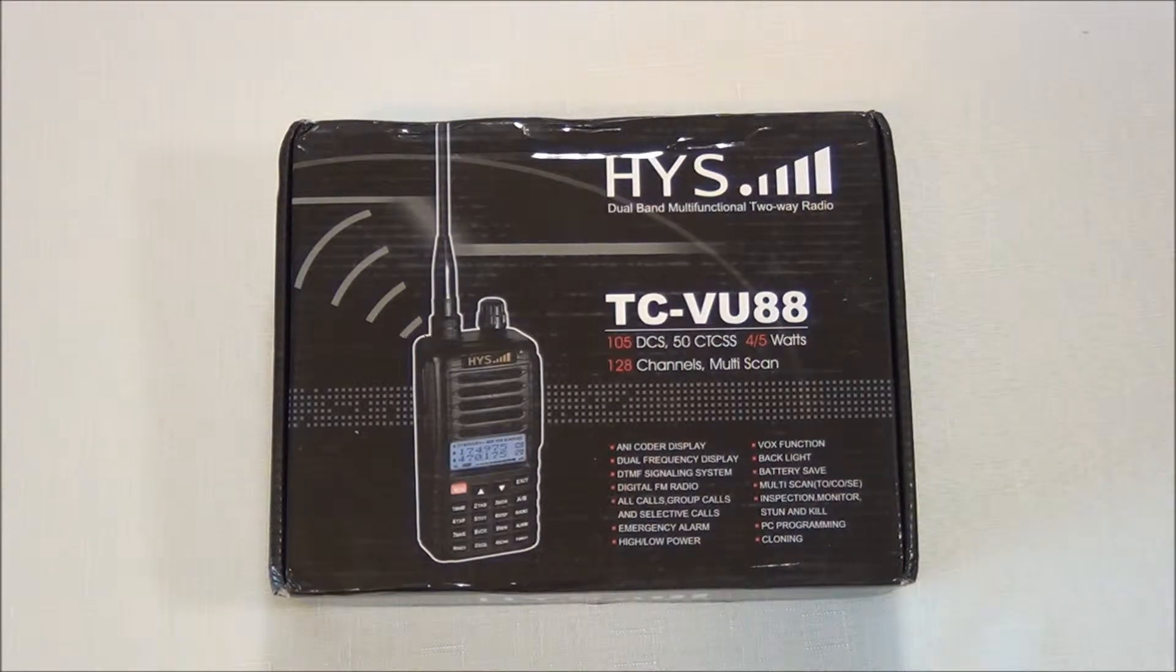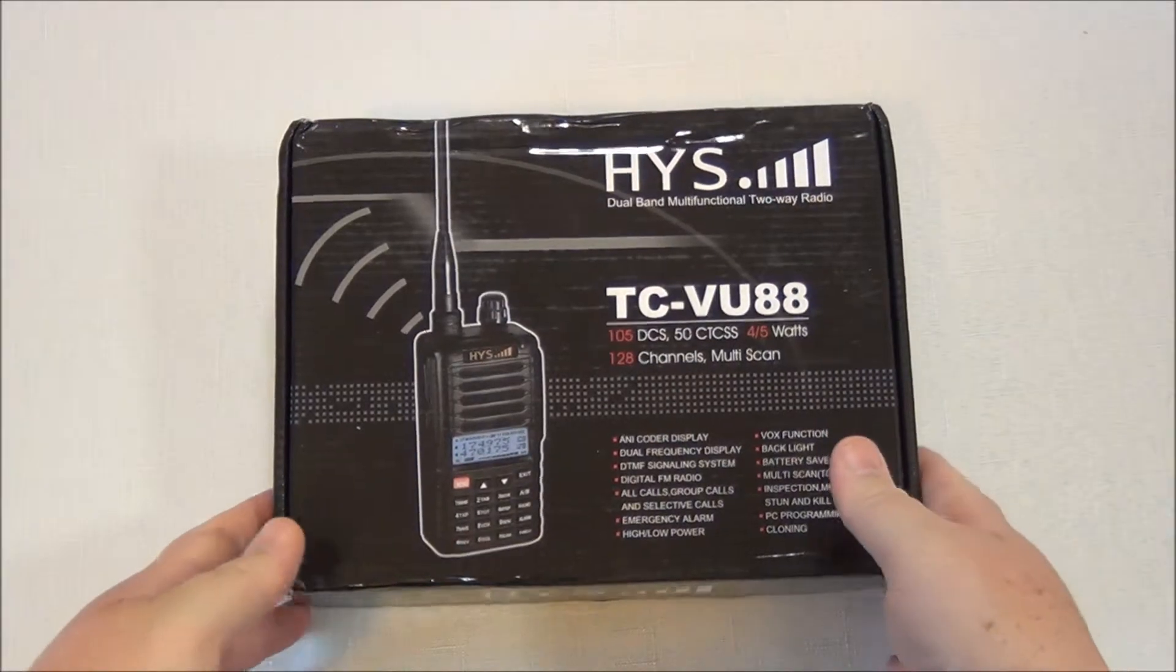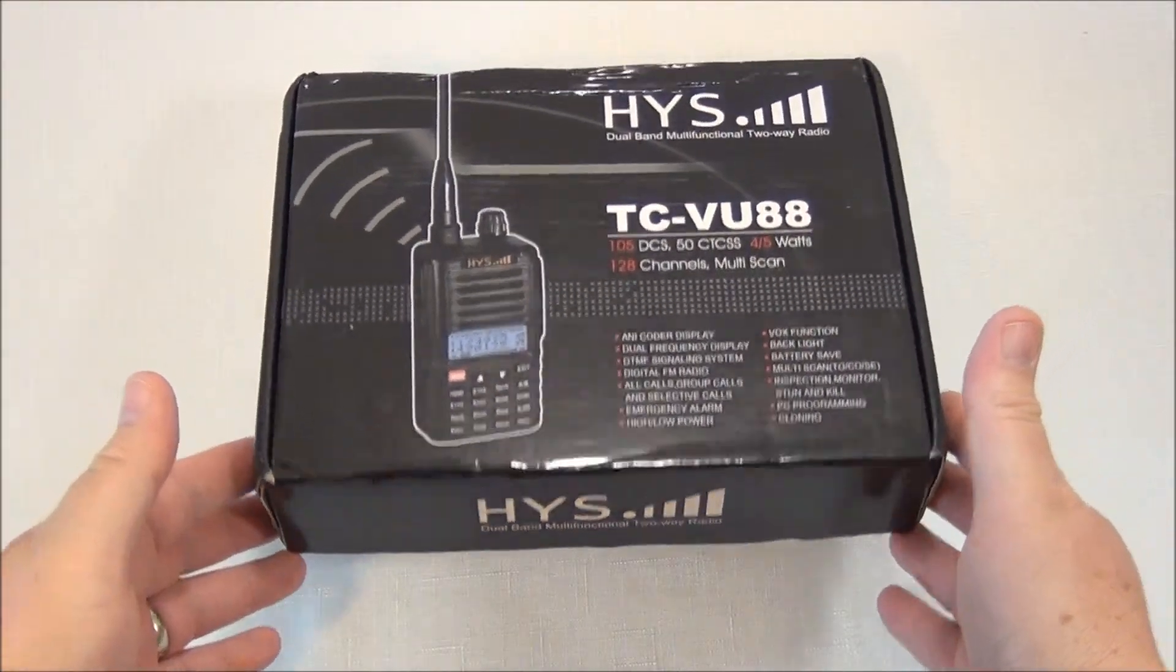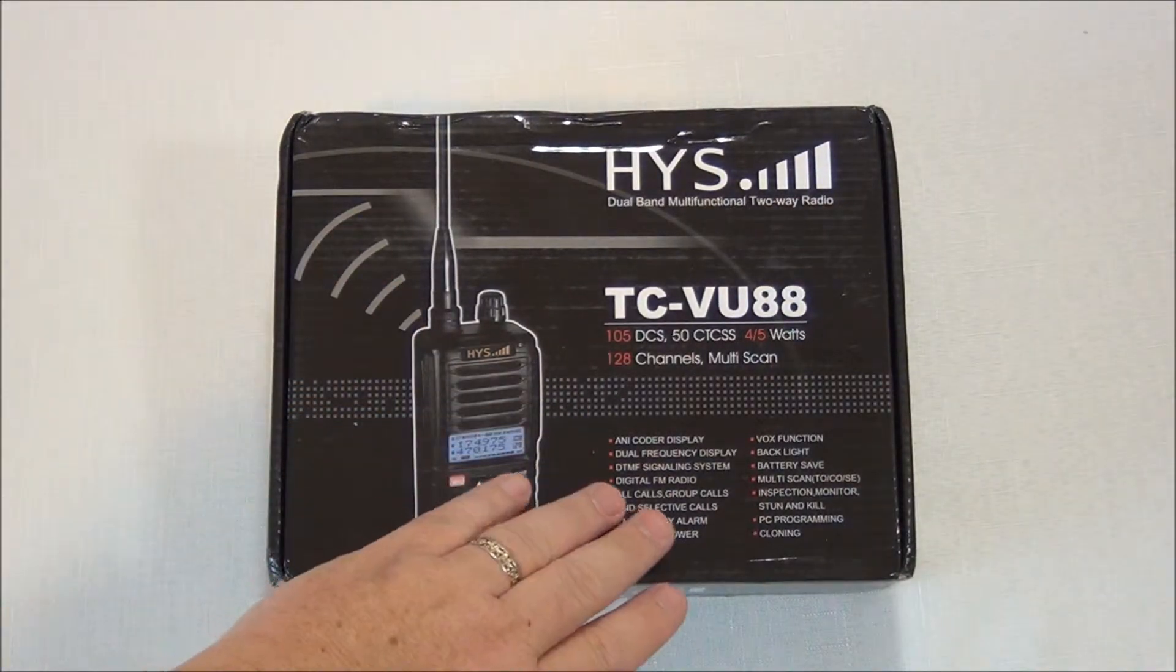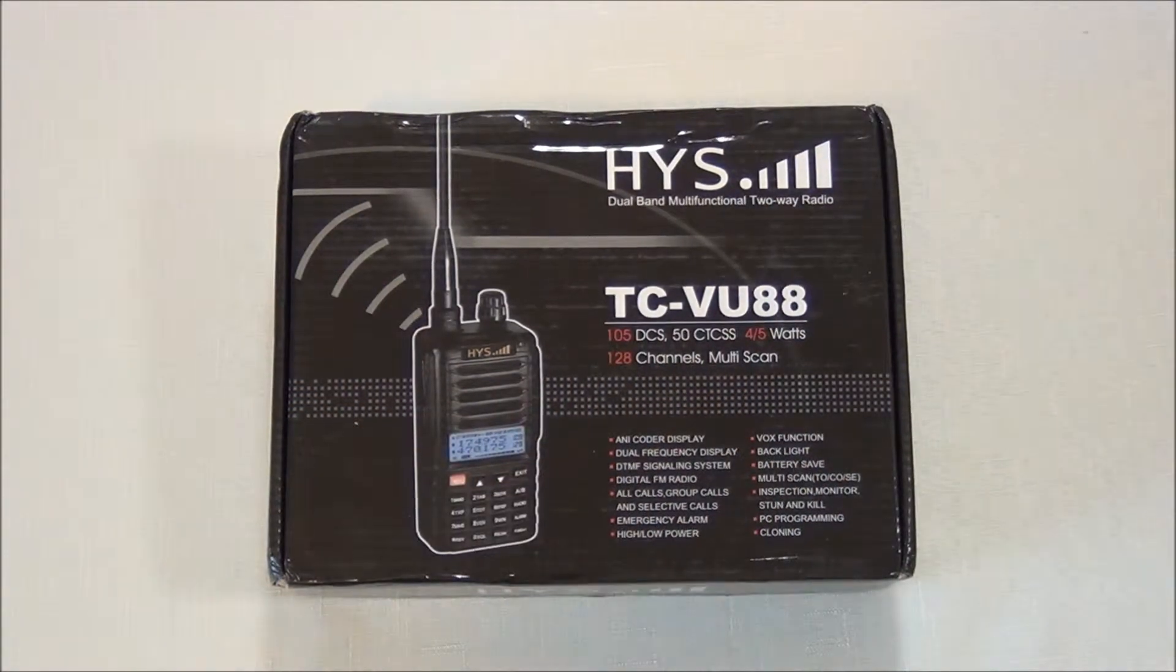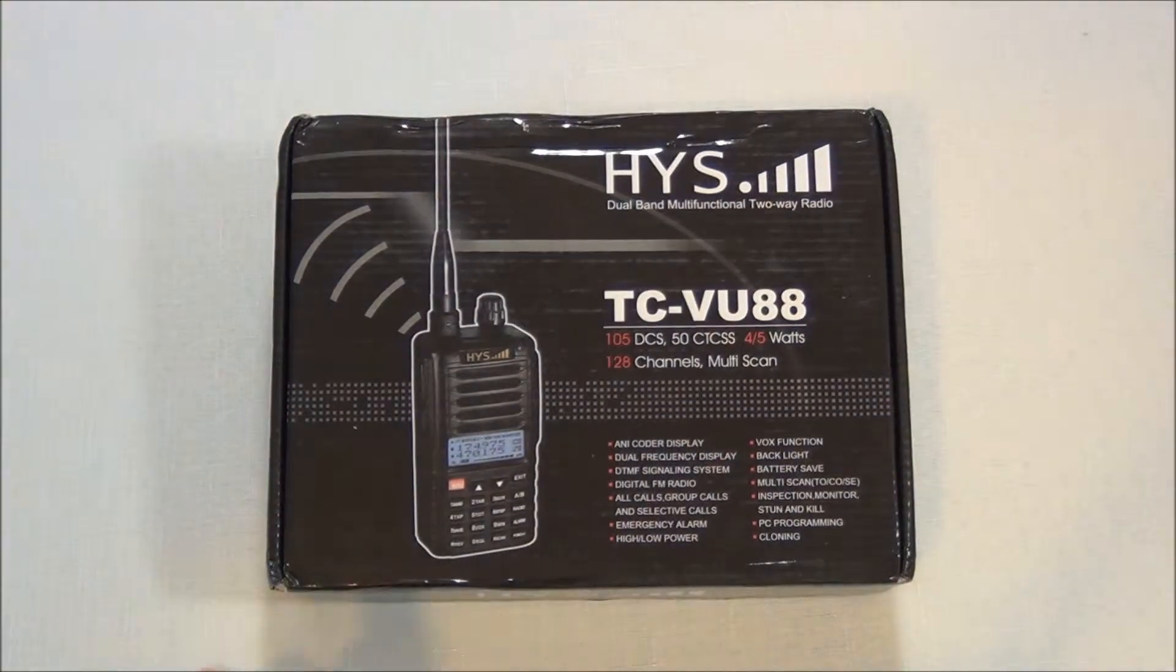Okay, when you first receive the HYS dual band transceiver, this is the box that you receive. It's a pretty nice looking little box and shows the radio and gives an overview of all of the specifications.